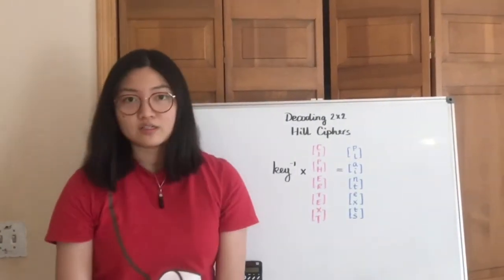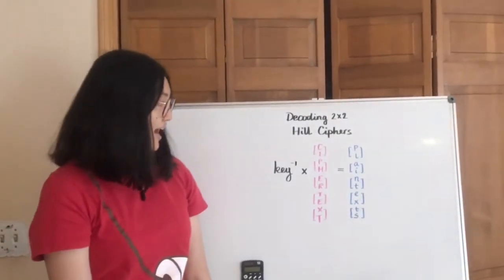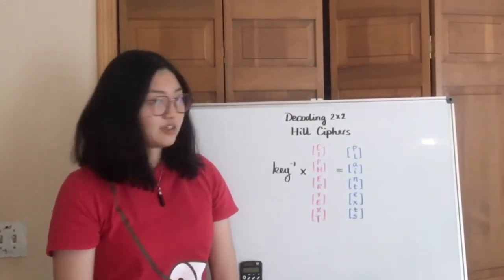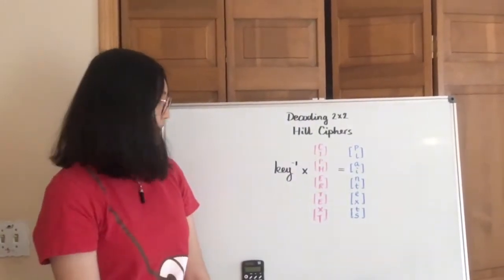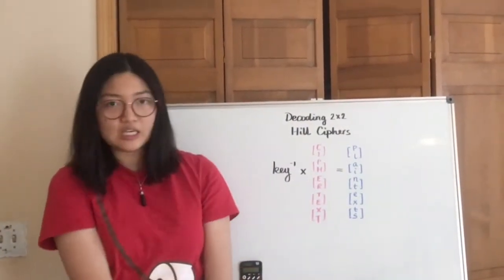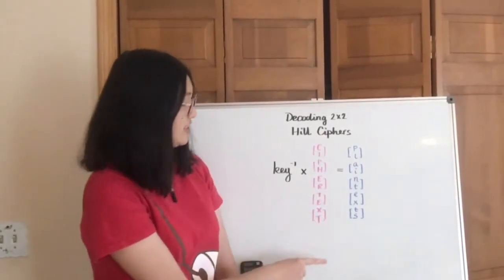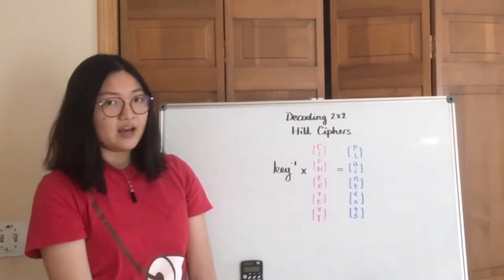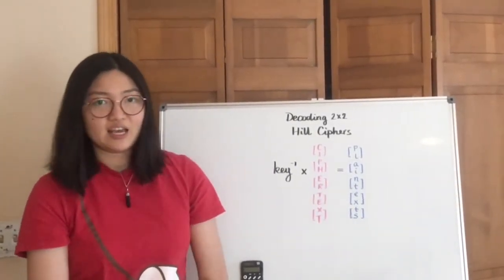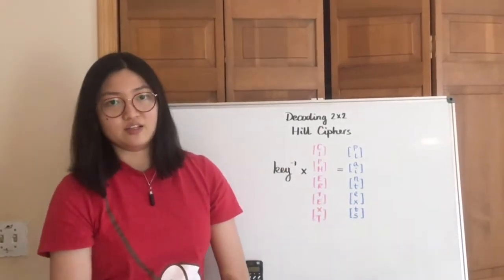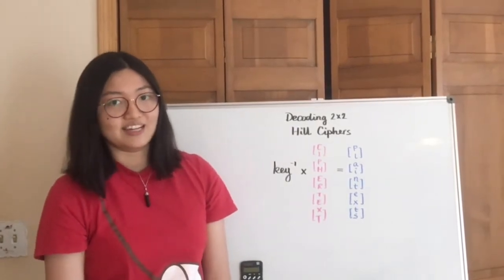Hey guys, so today we're going to talk a little bit about decoding a 2x2 Hill cipher. The basic process is very similar to when we encode it. Instead of the key to multiply by a plaintext, you use the inverse of the key to multiply by the ciphertext to get your plaintext. However, the procedure to get your inverse of the key is a little less straightforward than just having an encoding key that you can directly use, so we're going to talk about that today.